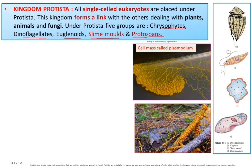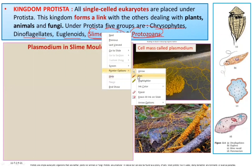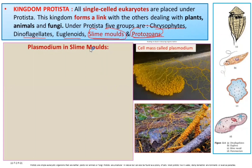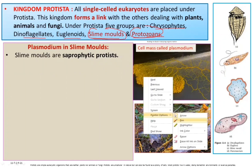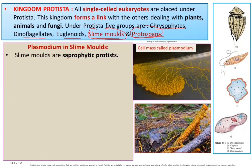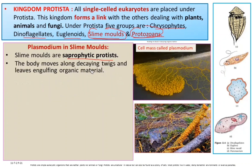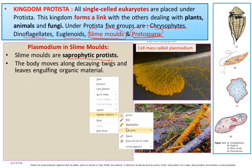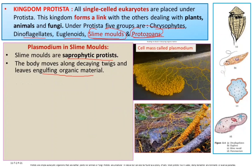The term plasmodium is associated with slime molds, while the other term relates to protozoans. Slime molds are saprophytic protists, feeding on decaying organic matter. Their body is found along decaying trees and leaves, engulfing organic matter.